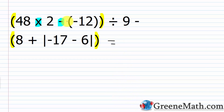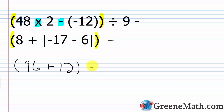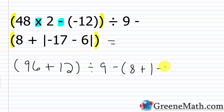I'm going to replace that. We'll have inside of parentheses 96 minus a negative 12. I can go ahead and write that as plus 12. Minus a negative is plus a positive. Then we'll have divided by 9, minus, and then inside of parentheses, we have 8 plus, and then inside of absolute value bars, negative 17 minus 6.